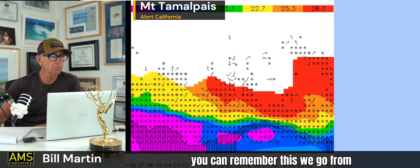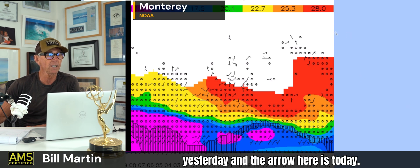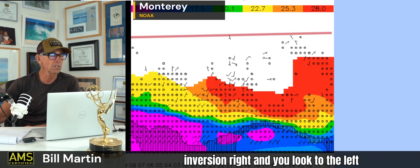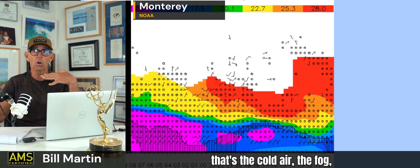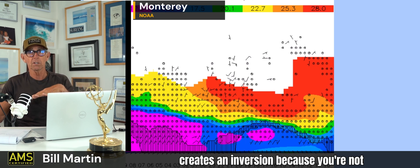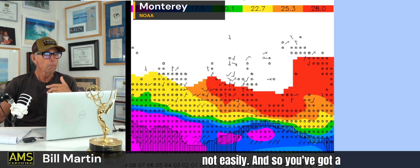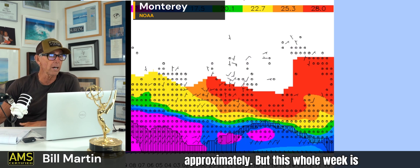So if you can remember this — time travels this way on this. So this is yesterday and the arrow here is today. Over here, this is elevation — that's a thousand feet above sea level. There's your inversion. The blue and the green, when it's close together, that's the cold air, the fog, warmer air above. Cold air underneath creates an inversion because you're not going to get any mixing in those layers — not easily. So you've got a deeper marine layer — about 1,800 feet as of this morning, approximately.